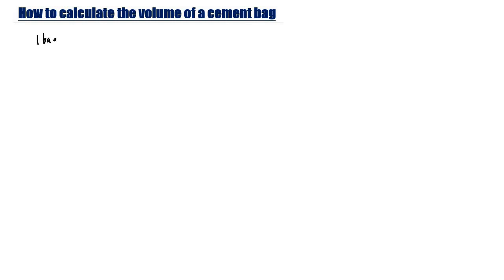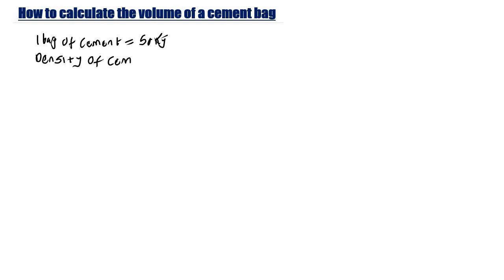So let me write it here. One bag of cement is equal to 50 kg — you need to know this value. The density of cement is equal to 1440 kg per meter cube. These are the two values you need to know as a civil engineer, so you need to memorize this.